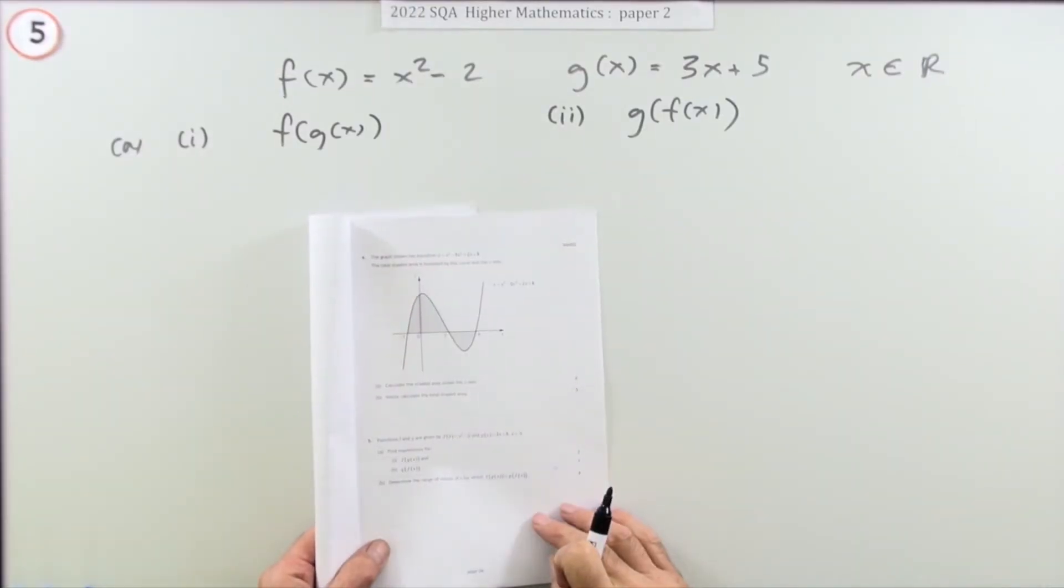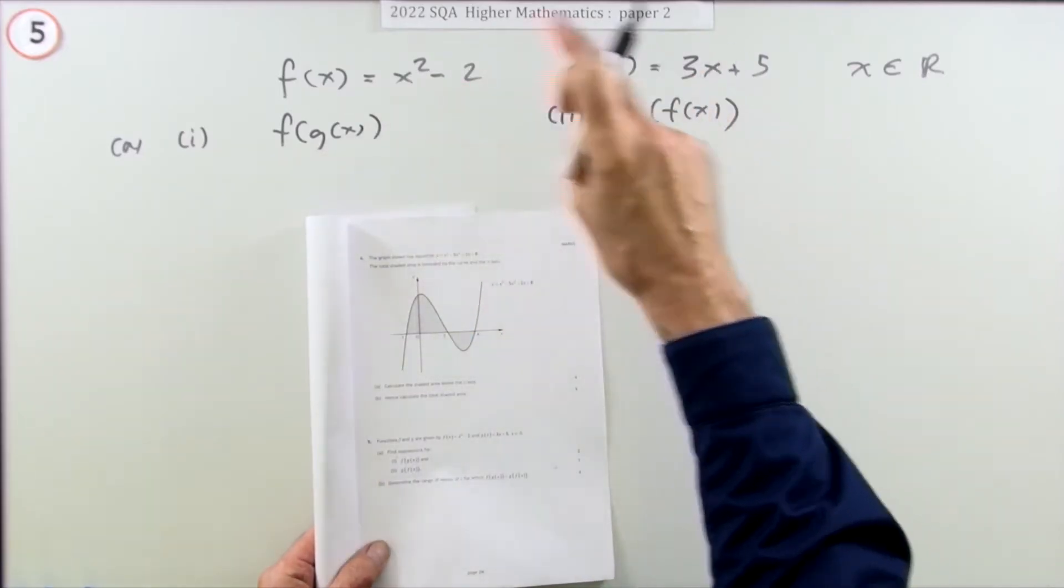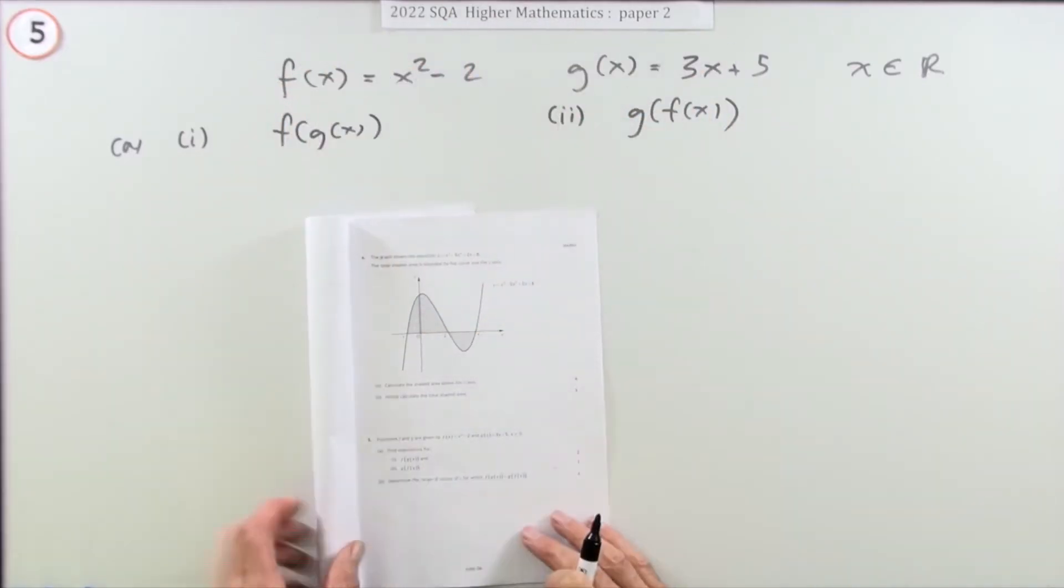Question 5 from the 2022 Higher Maths Paper 2 is a 7-mark question on composition of functions, function of a function.